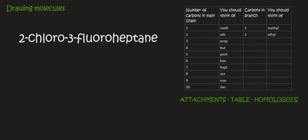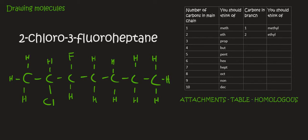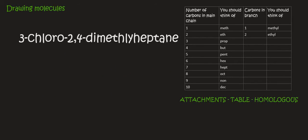Here we have 2-chloro-3-fluoro-heptane. 'Hept' is 7, so you just draw 7 carbons. Then on carbon number 2 we have a Cl, and on carbon number 3 we have a fluorine — so that's an F. And that's it. The rest is just hydrogen. And so there we have that one.